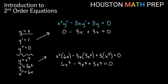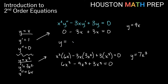We know that y equals x and y equals x cubed are both solutions. For second order equations, constant multiples of a solution are also solutions — so y equals 9x is a solution, and y equals 7x cubed is a solution. Not only that, but any linear combination of the two is also a solution. For example, y equals 2x minus 4x cubed, or y equals negative 5x plus 10x cubed, are both solutions. You can plug these in to verify.